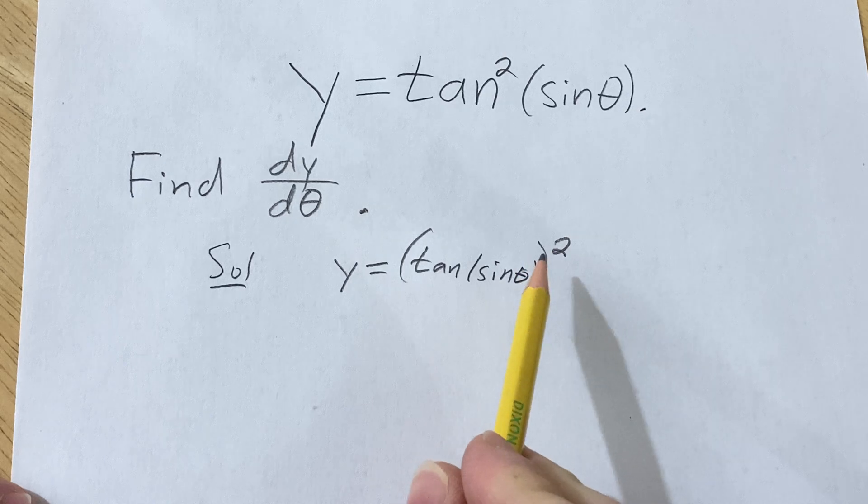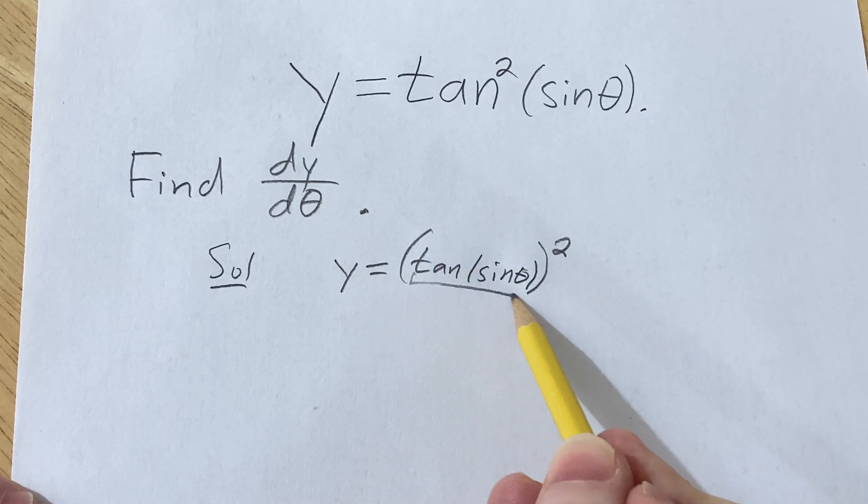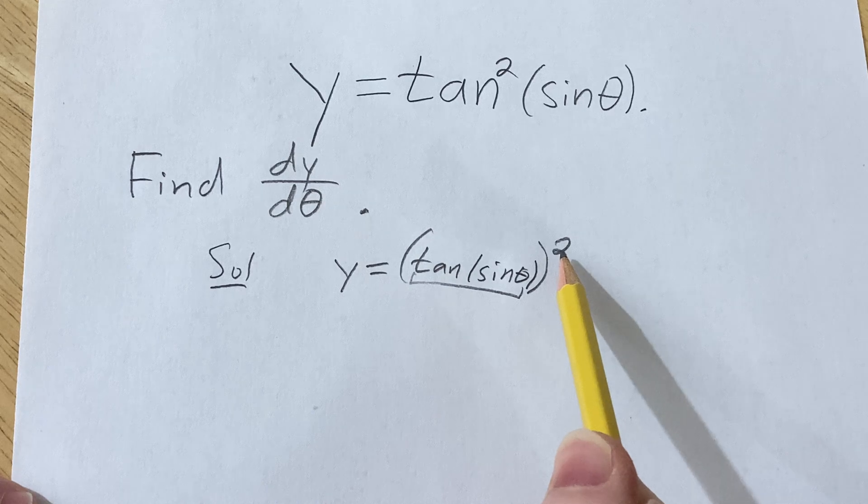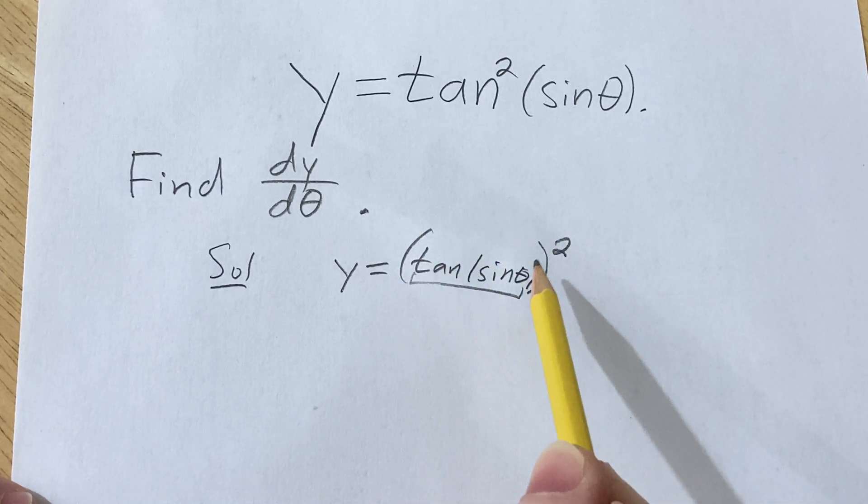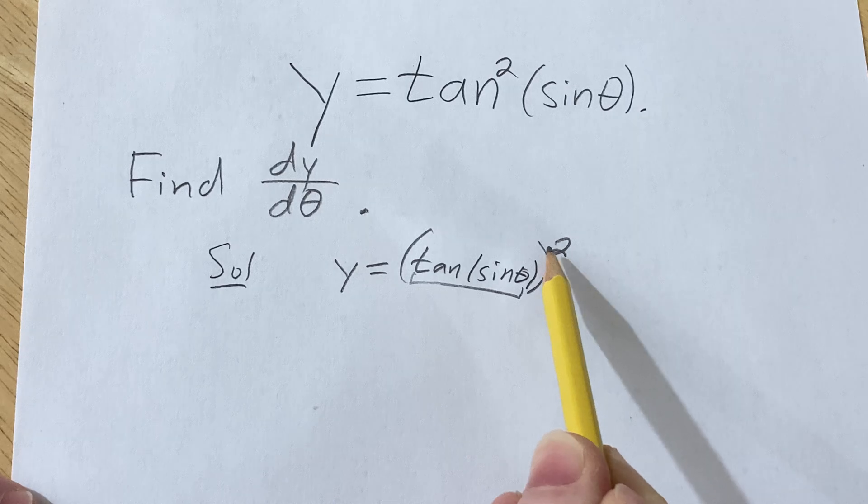Now when we take the derivative, it's a little bit more clear that this is our inside function, and we're taking the derivative and we have a composition of functions. So we're going to use the chain rule multiple times in this problem.